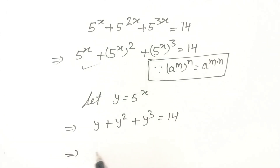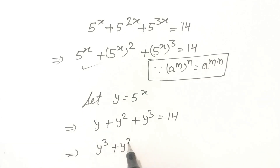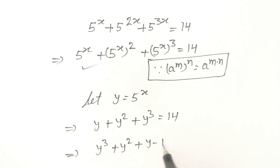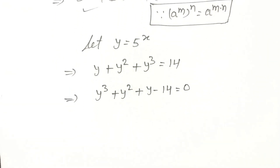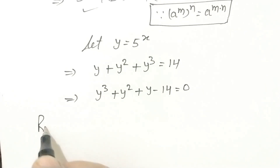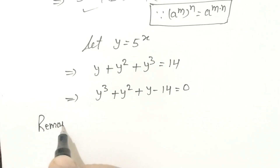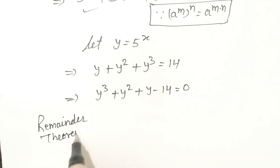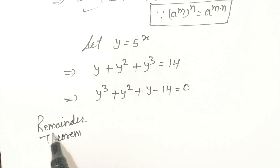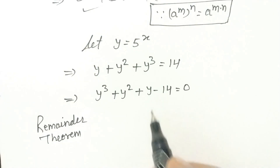If we rearrange the equation, y cubed plus y squared plus y minus 14 is equal to 0. Now if we use the remainder theorem to factorize this.